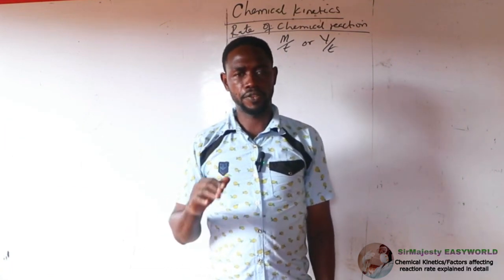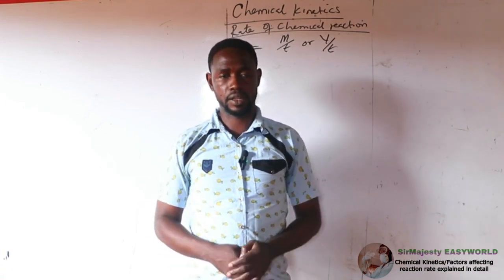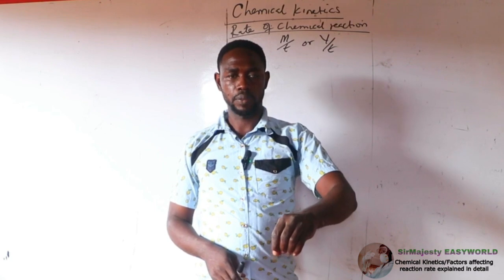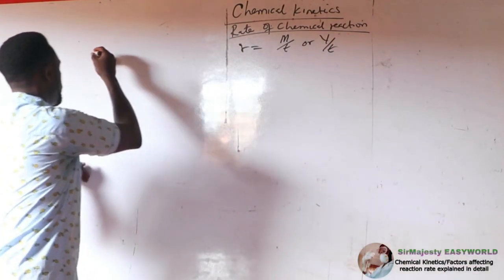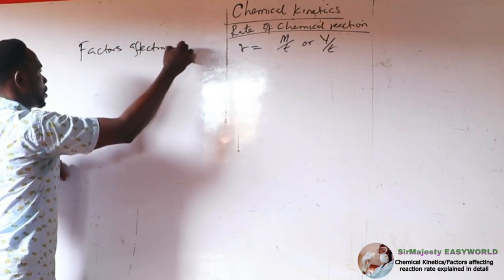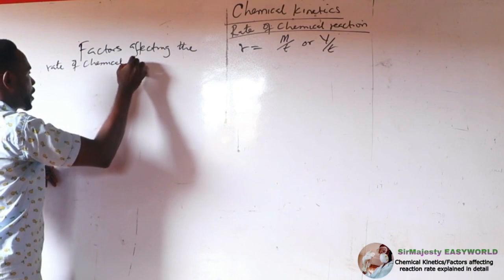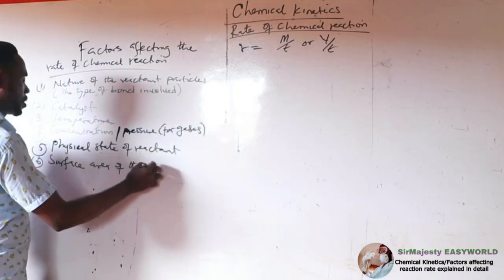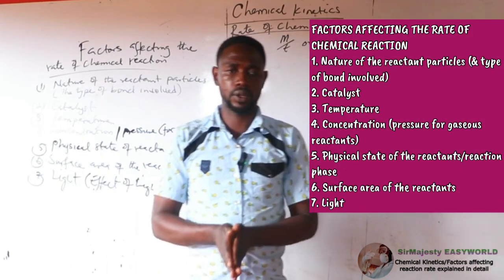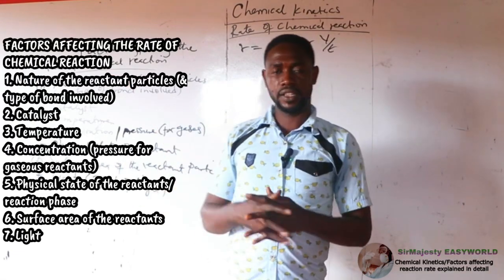Now let us look at those factors that affect the rate of chemical reaction. There are many factors, but I will list the major ones. Before we discuss them, we need to see how these factors actually affect the rate of chemical reaction.